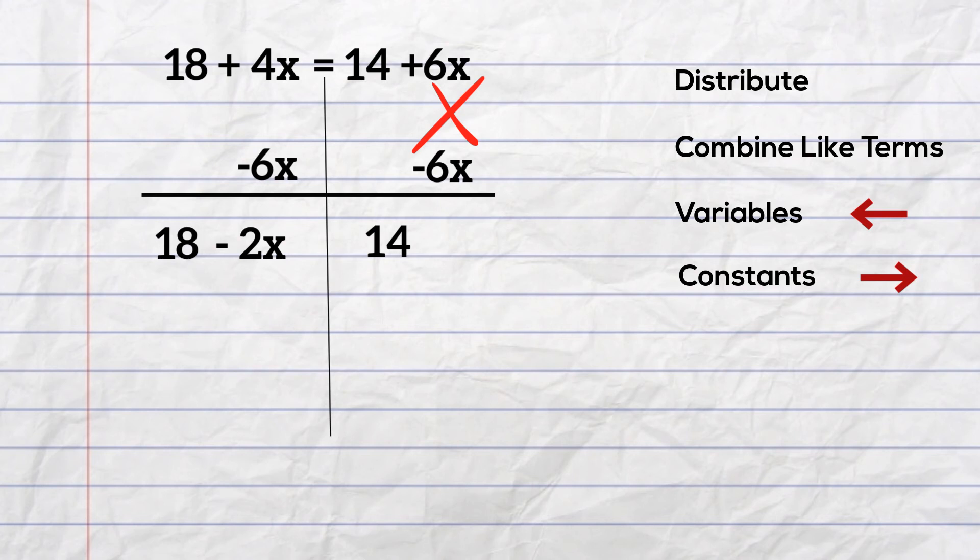Now we need to move all the numbers to the right, which we can do by subtracting 18. Remember, what you do to one side of the equation you need to do to the other. Subtracting 18 from both sides gives us -2x equals -4.